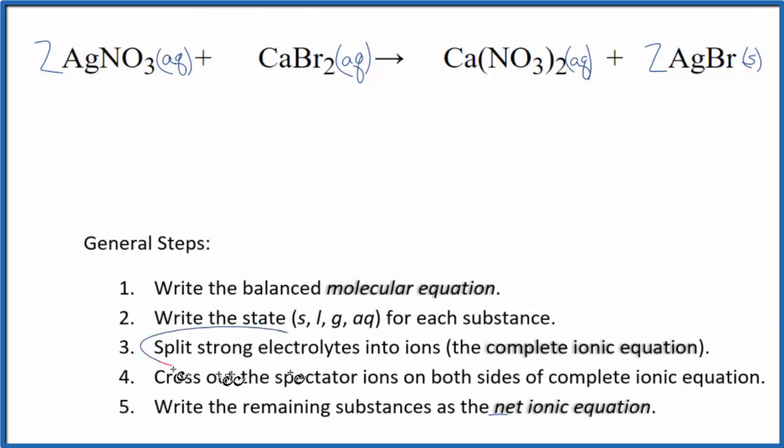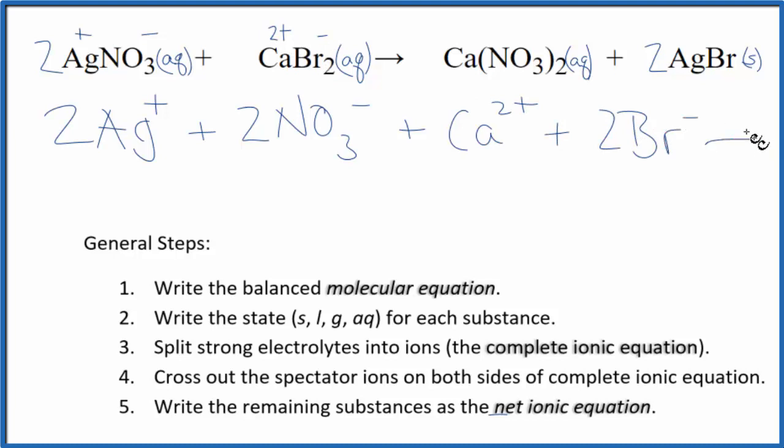Now we can split the strong electrolytes into their ions for the complete ionic equation. Silver always has a 1 plus ionic charge, and the nitrate ion always has a 1 minus - both good ones to remember. For two silver ions, and I'll write aqueous at the end, I won't write that now, plus two nitrate ions. For the calcium, that's in group 2, that's 2 plus, and the bromine forms 1 minus ions. So we have Ca2 plus. And then for the bromine, the bromide ion, we have two of these. So we need to write 2Br minus. Those are the reactants.